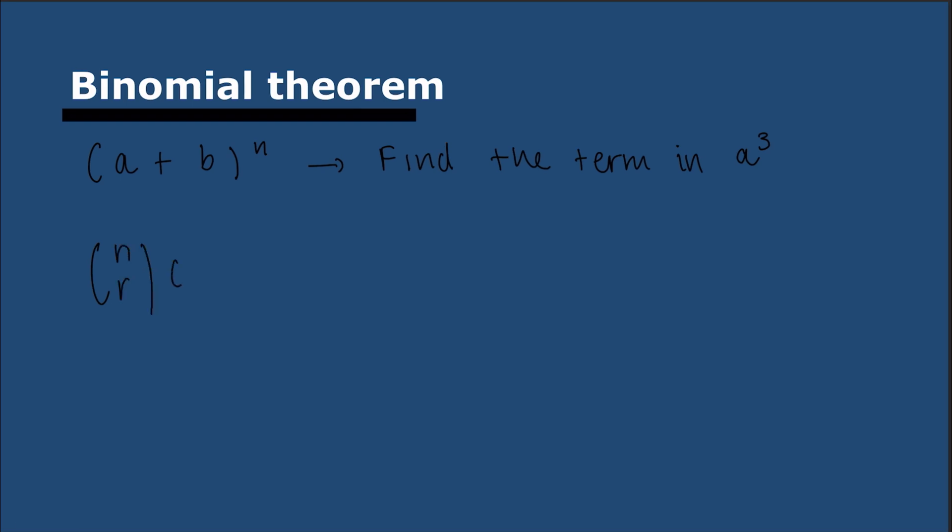Starting off with binomial theorem, it misses the single most important formula, which is how do you find a term? So when you have (a + b)^n, and a and b could be x or a number, they'll often ask you to find a term. For example, the term in a^3, but it could be any term. The formula is just not in the booklet. So the formula is nCr times a^(n-r) times b^r.